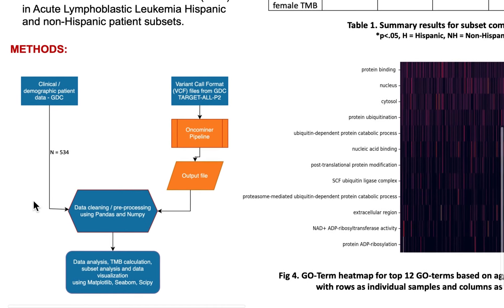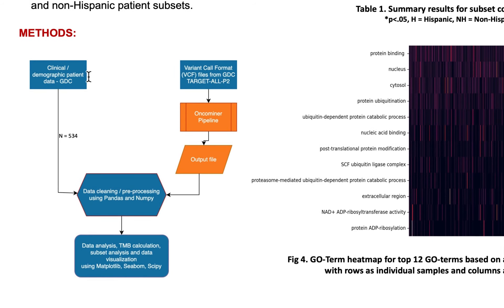In order to do this, we obtained clinical and demographic data for each patient by making API calls to the Genomics Data Commons, or the GDC endpoint, by passing in fields of interest while applying filters specific to the target ALL P2 study. We also downloaded variant call format files, or VCF files, containing mutational data from the GDC portal.